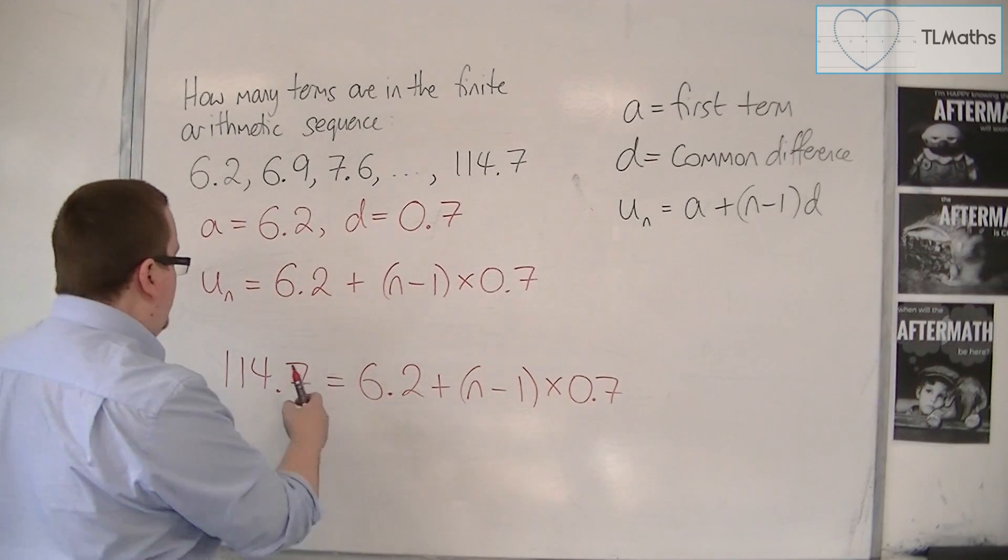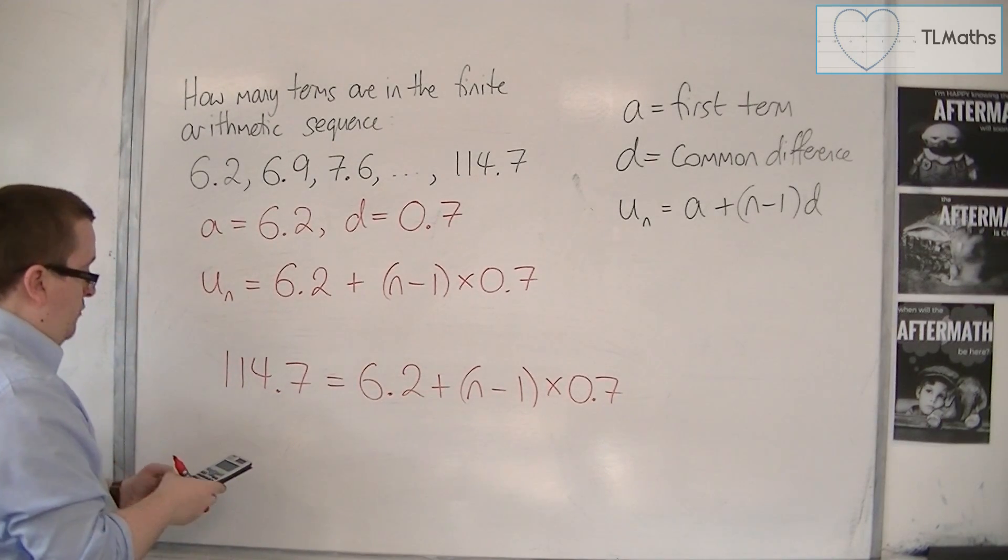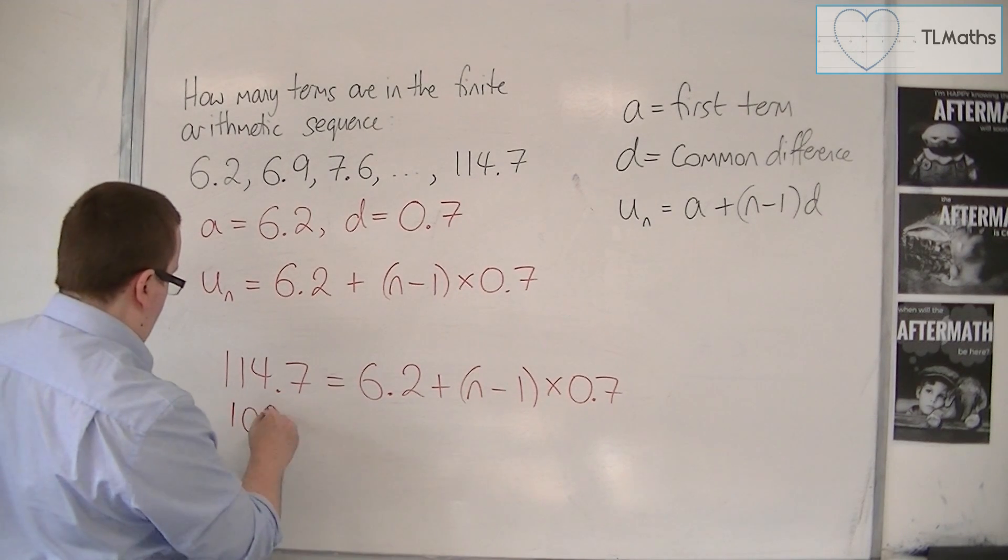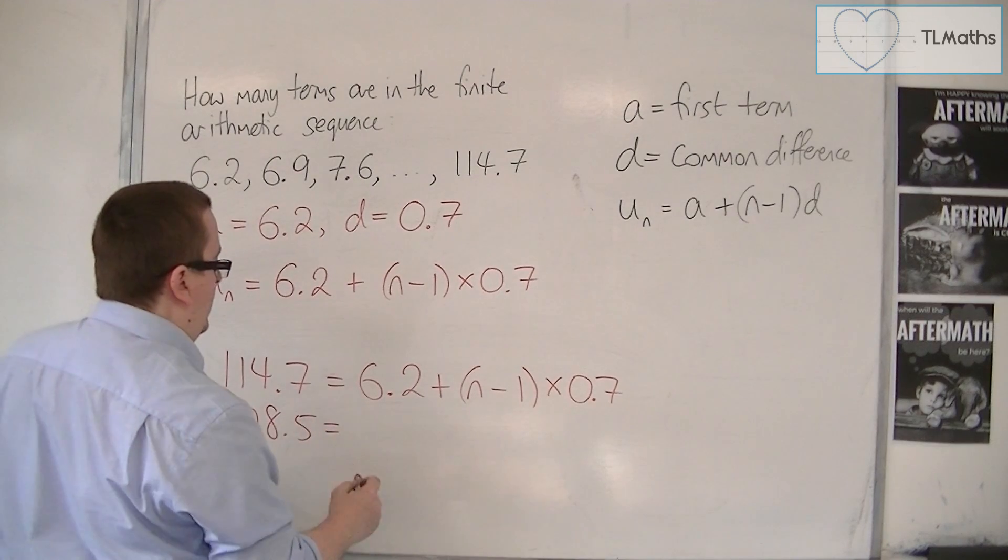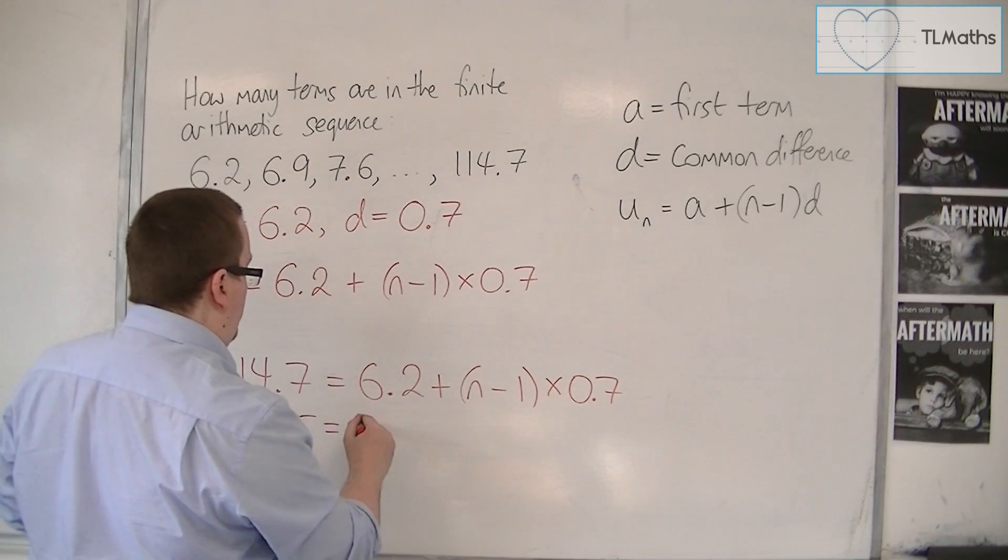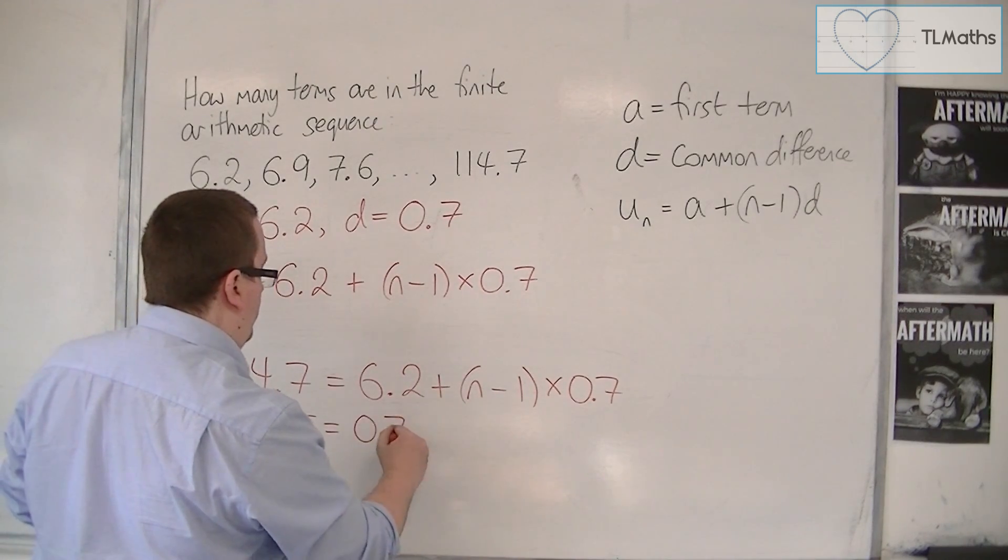I'm going to take 6.2 from both sides. So 114.7 take away 6.2, so that's 108.5, is equal to 0.7 times n.